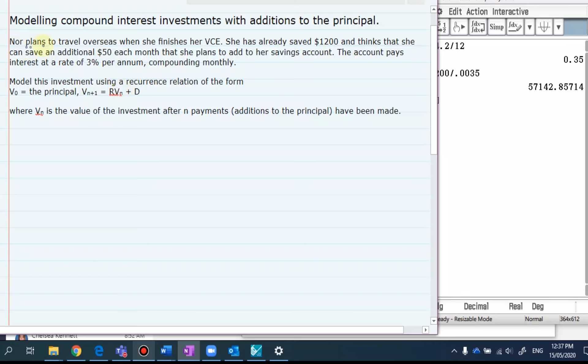Noor plans to travel overseas when she finishes VCE. She's saved $1,200 which will probably get you halfway across the Pacific and thinks that she can save an additional $50 each month that she plans to add to her savings account. The account pays interest at a rate of 3% per annum. The key part here is it's compounding monthly and we're asked to model this.